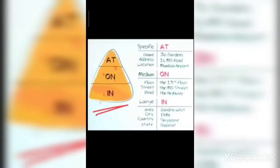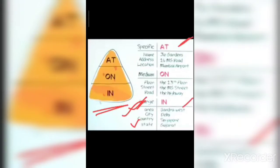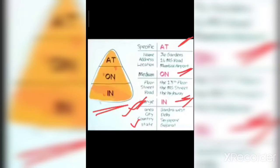अब 'in' का use देखते हैं। 'In' सबसे large area के लिए है — जब बहुत बड़े area की बात हो तब 'in' use करेंगे। जैसे: most of the heroes live in Bandra West. City, country, state — जहाँ बहुत बड़ा area हो। याद रखो: 'at' is used for a specific point; 'on' is used when a small area is given from a large area; 'in' is used when a very large area is given।